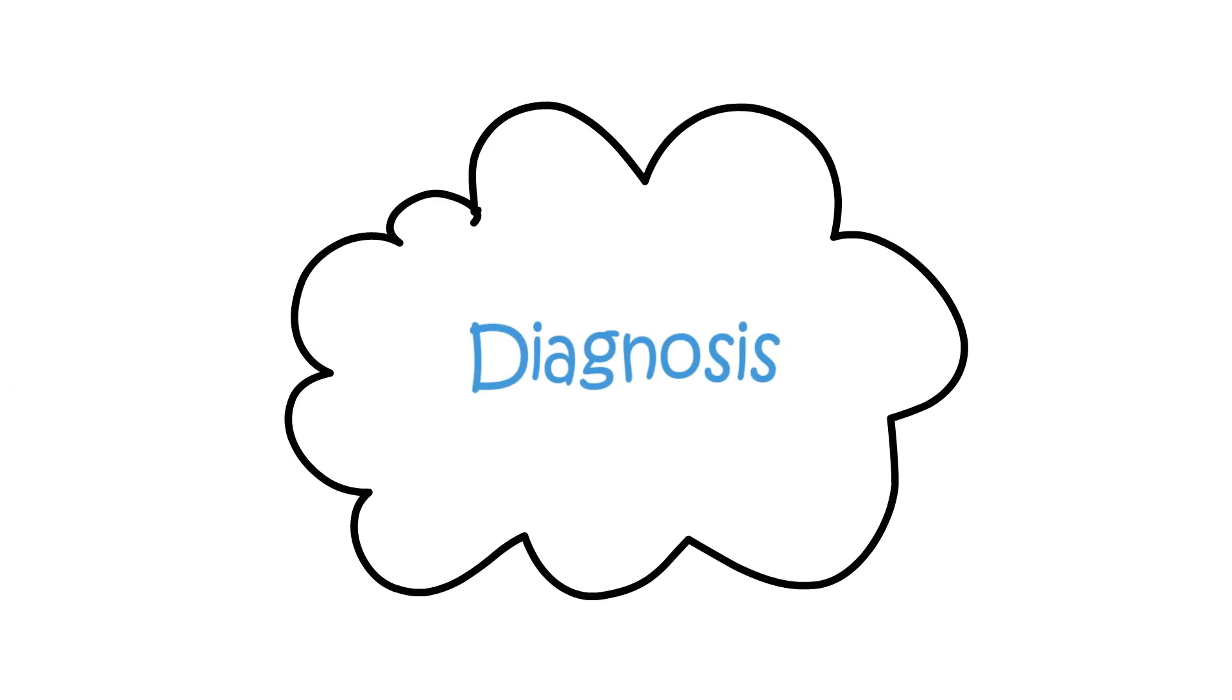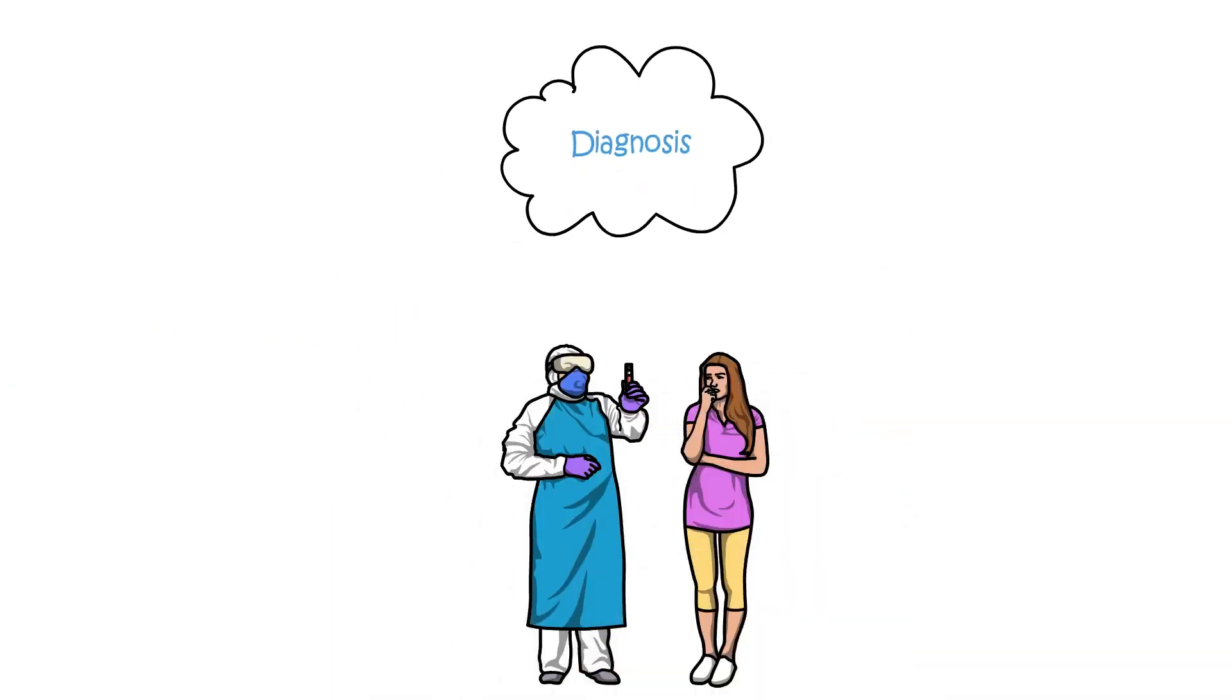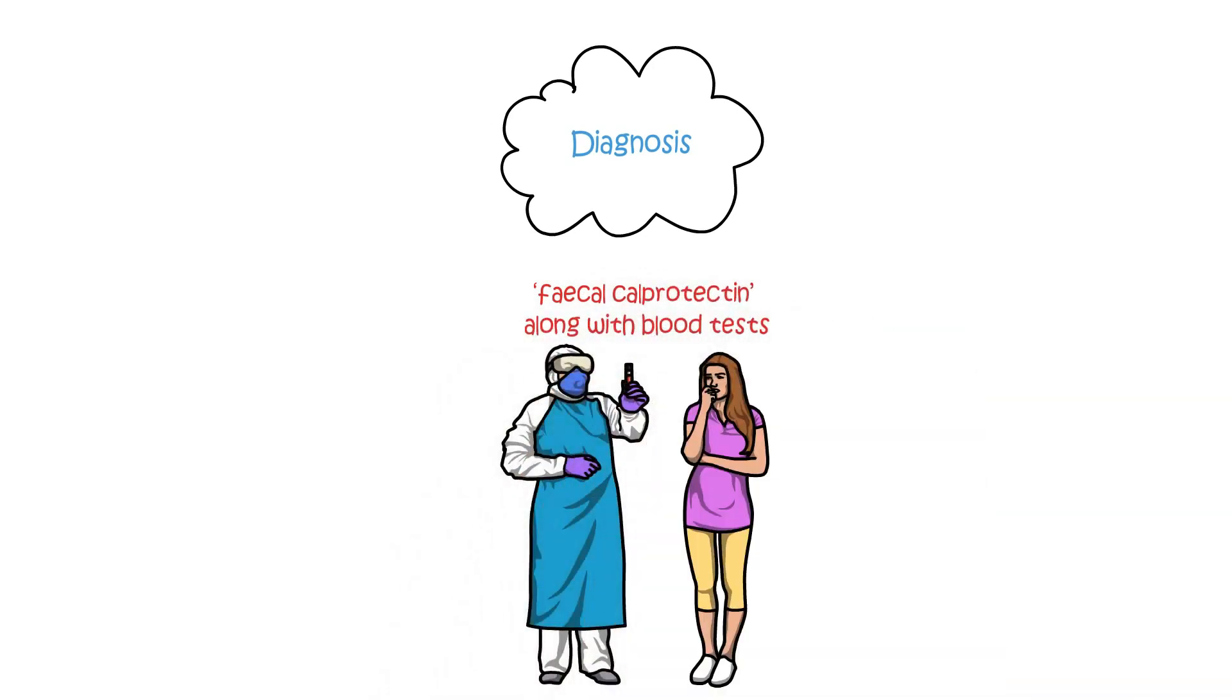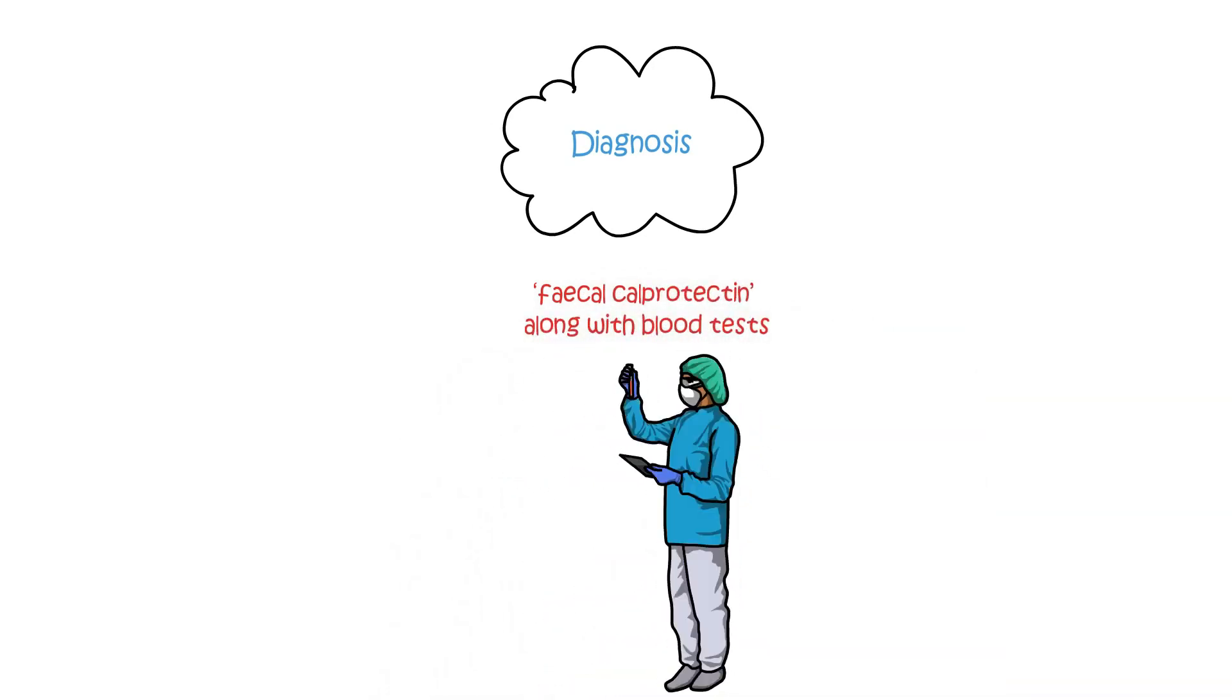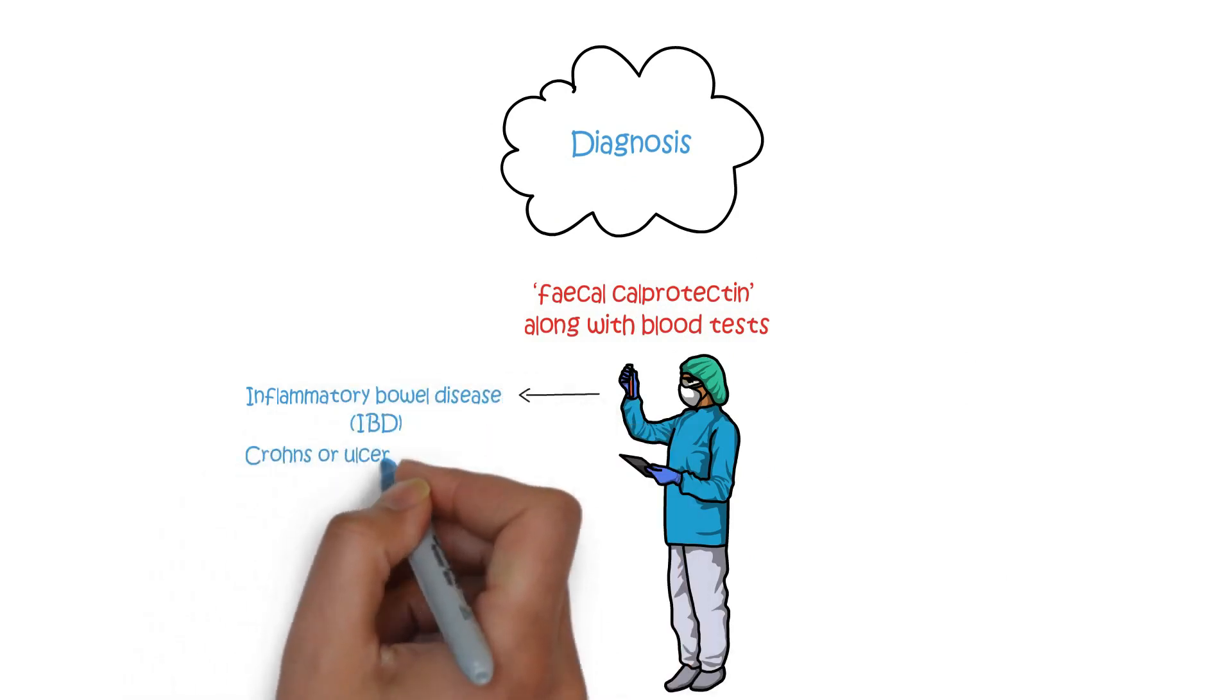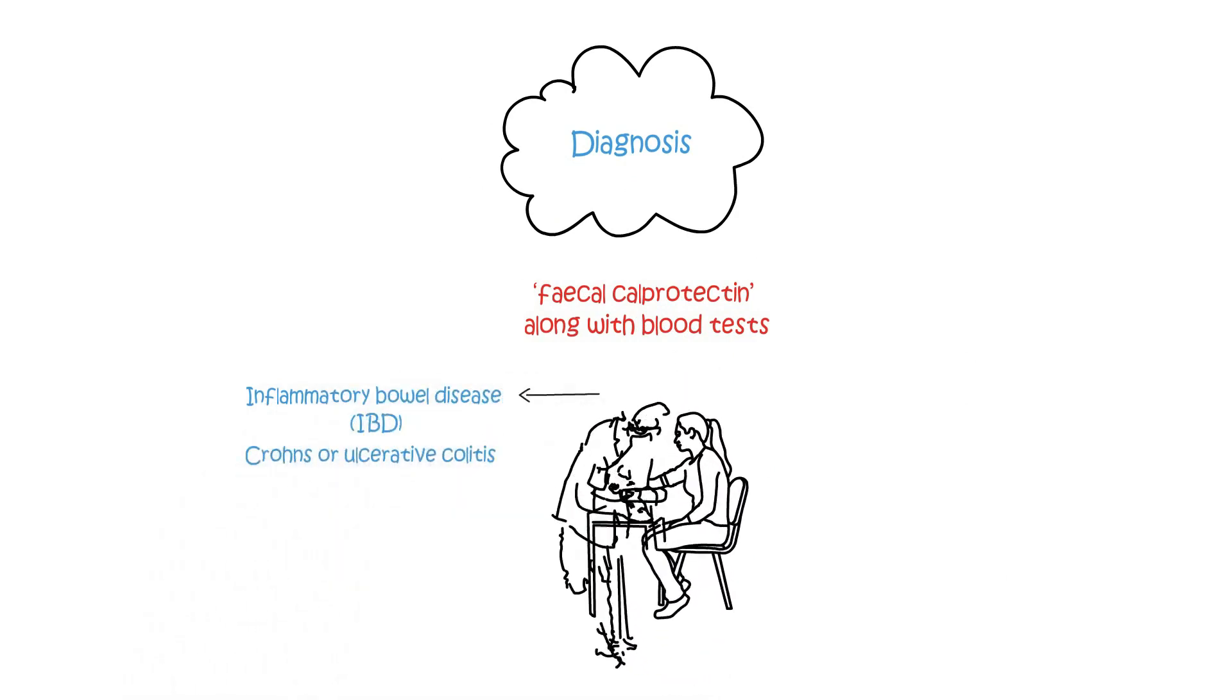Diagnosis. Initially, your doctor is likely to perform a stool test called fecal calprotectin along with blood tests. If the results are suspicious of inflammatory bowel disease, IBD, meaning Crohn's or ulcerative colitis, then further tests are arranged.